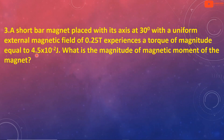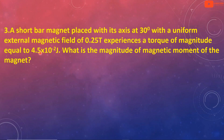Third question: a short bar magnet placed with its axis at 30 degrees with a uniform external magnetic field of 0.25 tesla experiences a torque of magnitude equal to 4.5×10⁻² joule. What is the magnitude of the magnetic moment of the magnet? The external magnetic field is 0.25 tesla and the torque is 4.5×10⁻² joule.